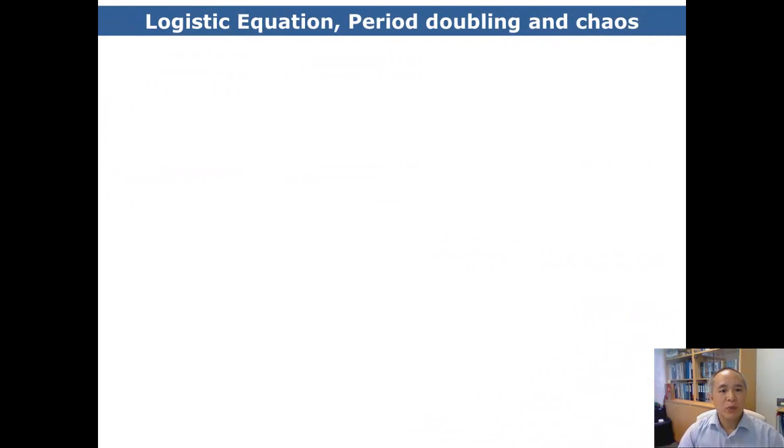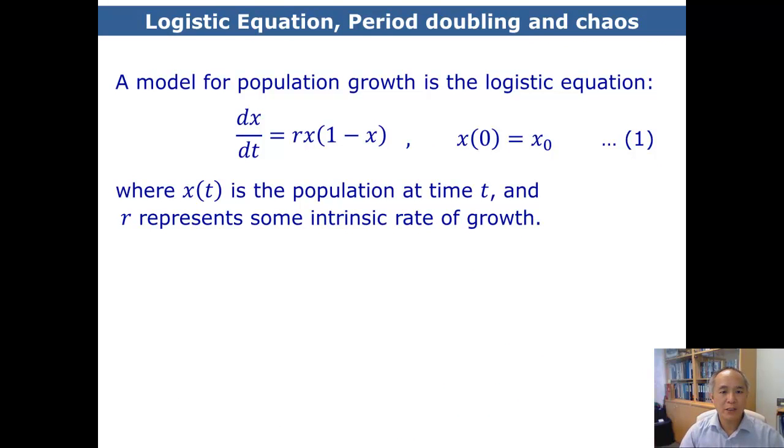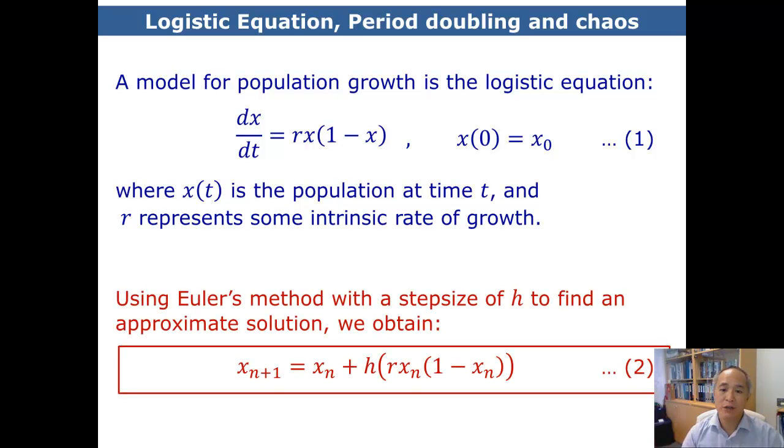We start with the logistic equation. The logistic equation can be written as dx/dt equals rx times 1 minus x with some initial condition given. It can be used to model population growth of some sort, where x is the population of the species in question at time t and r represents some intrinsic rate of growth.